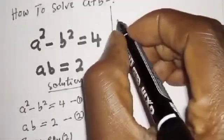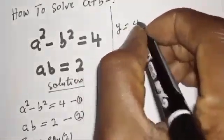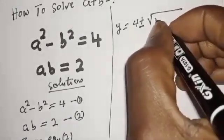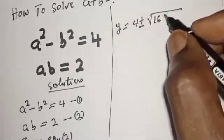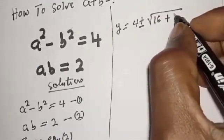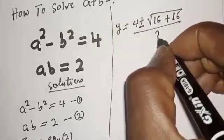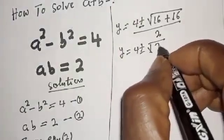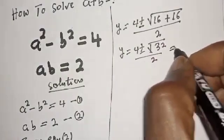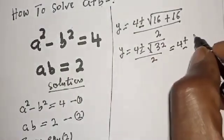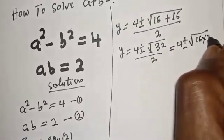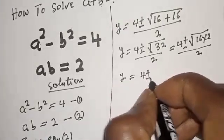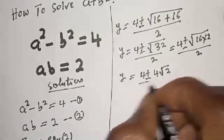Then y equals 4 plus or minus square root of 16 plus 16, over 2. That gives y equals 4 plus or minus square root of 32 over 2, which is 4 plus or minus square root of 16 times 2 over 2, giving y equals 4 plus or minus 4 root 2 over 2.